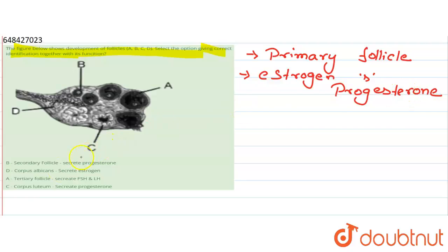Next one is tertiary follicle. Here it is given A is tertiary follicle, but A is not tertiary follicle. Here A is Graafian follicle.